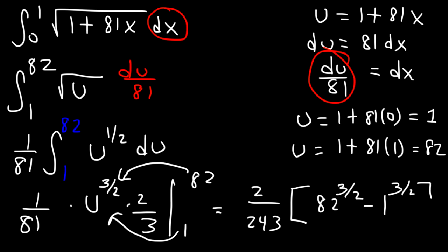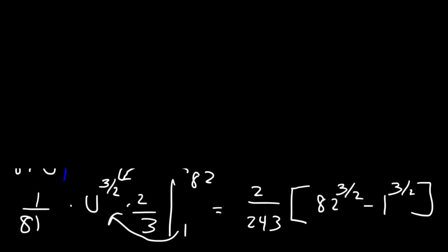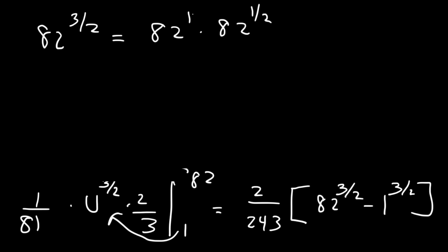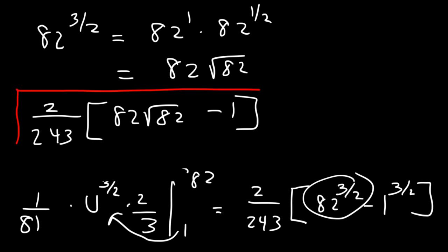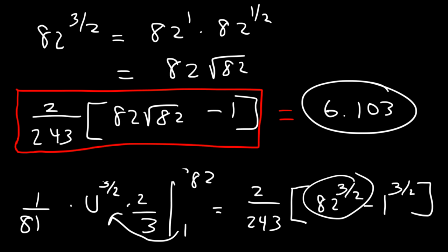Then plug in 1: minus 1 to the 3 halves. Now, 82 to the 3 halves is basically 82 to the first power times 82 to the 1 half, since 1 plus 1 half equals 3 over 2. 82 to the first is 82, and 82 to the 1 half is the square root of 82. So the final answer is 2 over 243 times 82 times the square root of 82. And 1 raised to anything is just 1. Converting to a decimal, that's approximately 6.103. That's the answer for this problem.